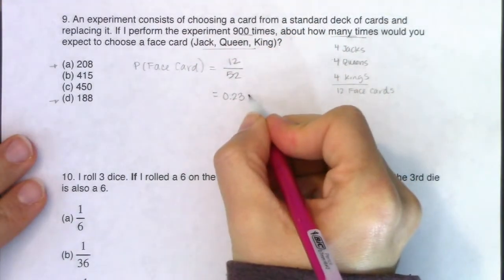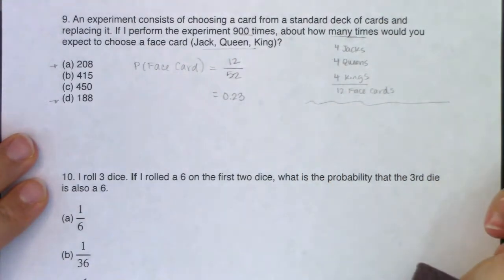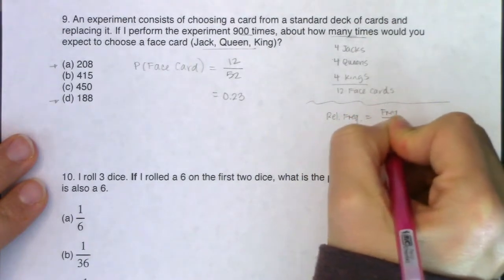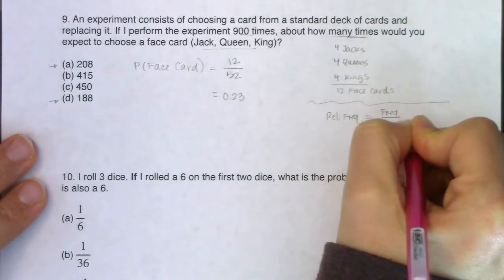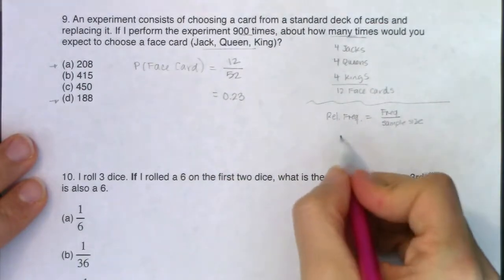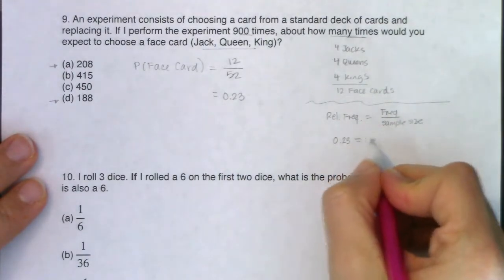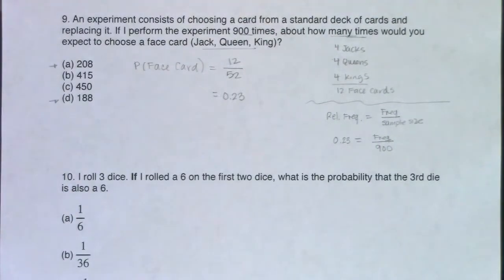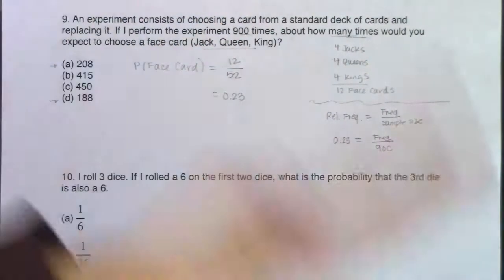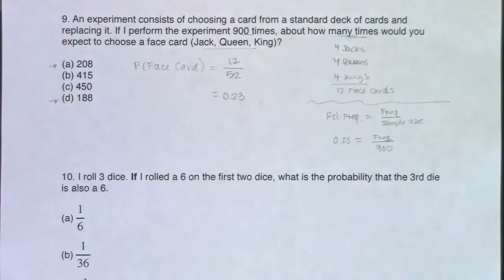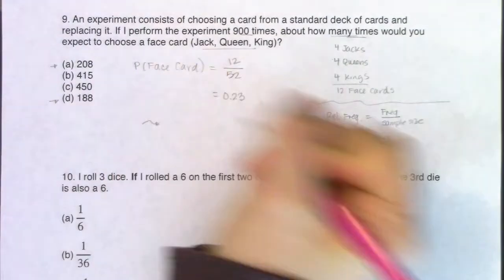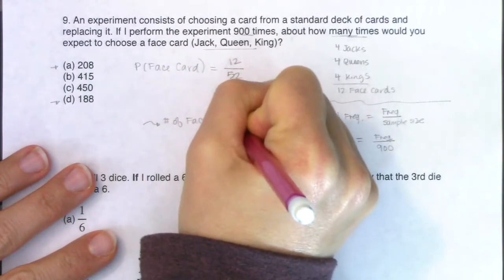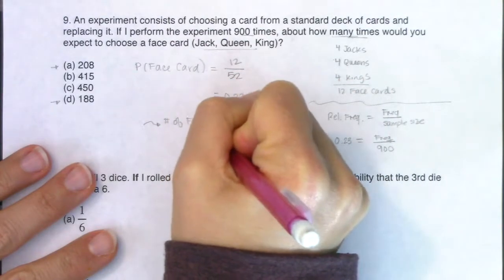So again, this is a relative frequency. Let's go all the way back to chapter one. We knew if we wanted to get a relative frequency, we would take our frequency and divide by our sample size. So what you have right now in this equation is you know the 0.23. You don't know the frequency, but you know in a sense that our sample size is 900. So another way of thinking of this is if you ever want to go from a relative frequency back to a frequency, multiply by the sample size.